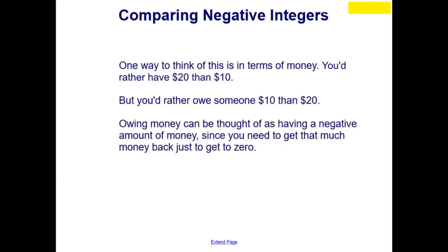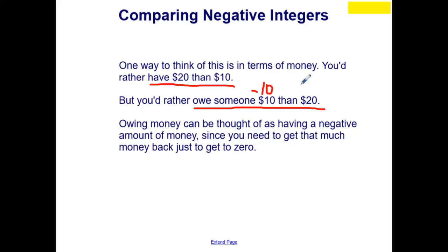One way to think about this is in terms of money. You'd rather have $20 than $10, but you'd rather owe someone $10 than $20. You would always want to owe less money. Owing money can be thought of as a negative amount of money — owing someone $10 would be negative 10, versus owing someone $20 would be negative 20. You'd always want a smaller amount to owe someone, since you need to earn that much money back just to get to zero. You always want to break even and not owe someone any money, so you go back to $0.